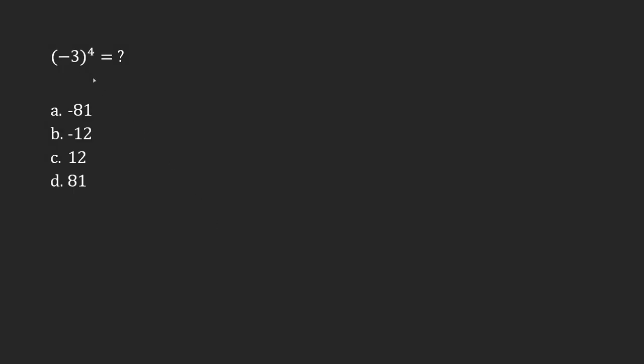Negative 3 to the power of 4 means that I'm multiplying negative 3 by itself 4 times. Now,